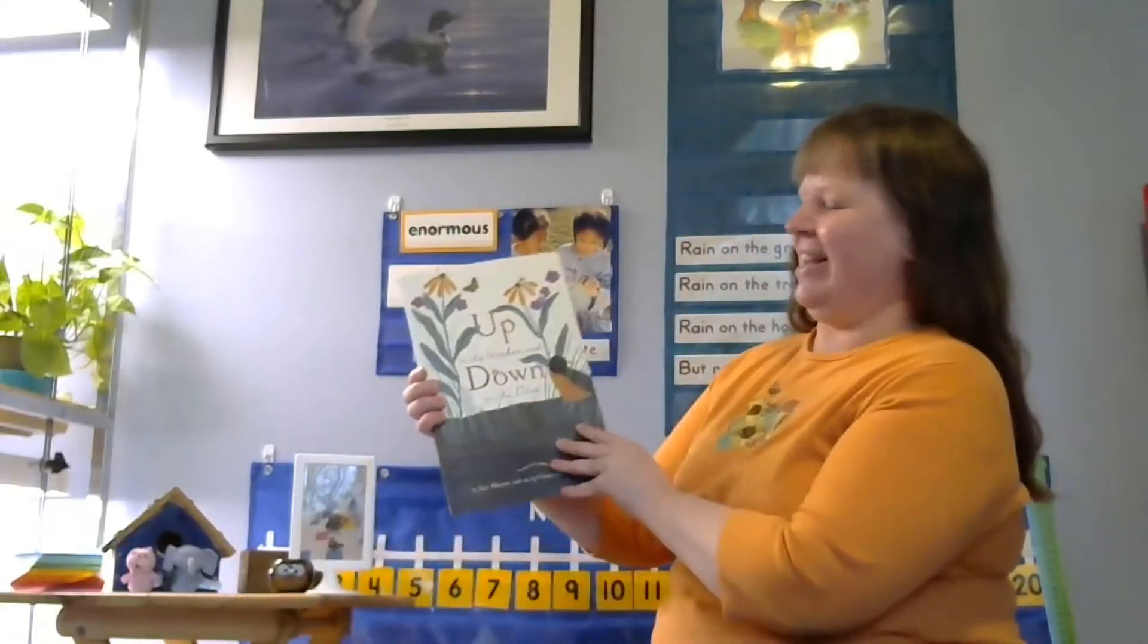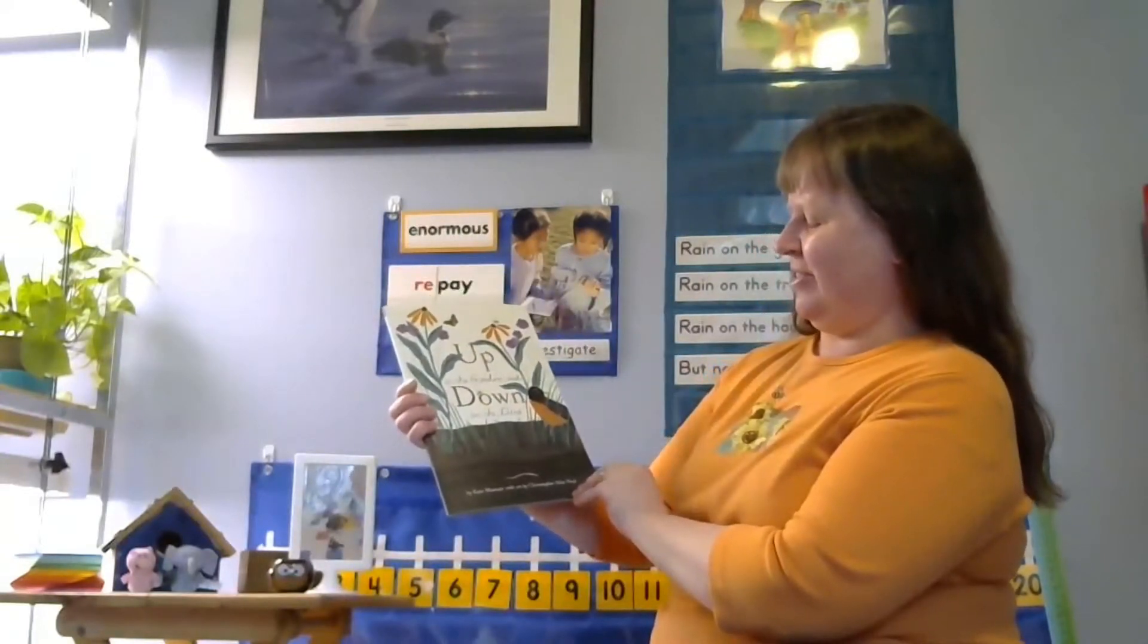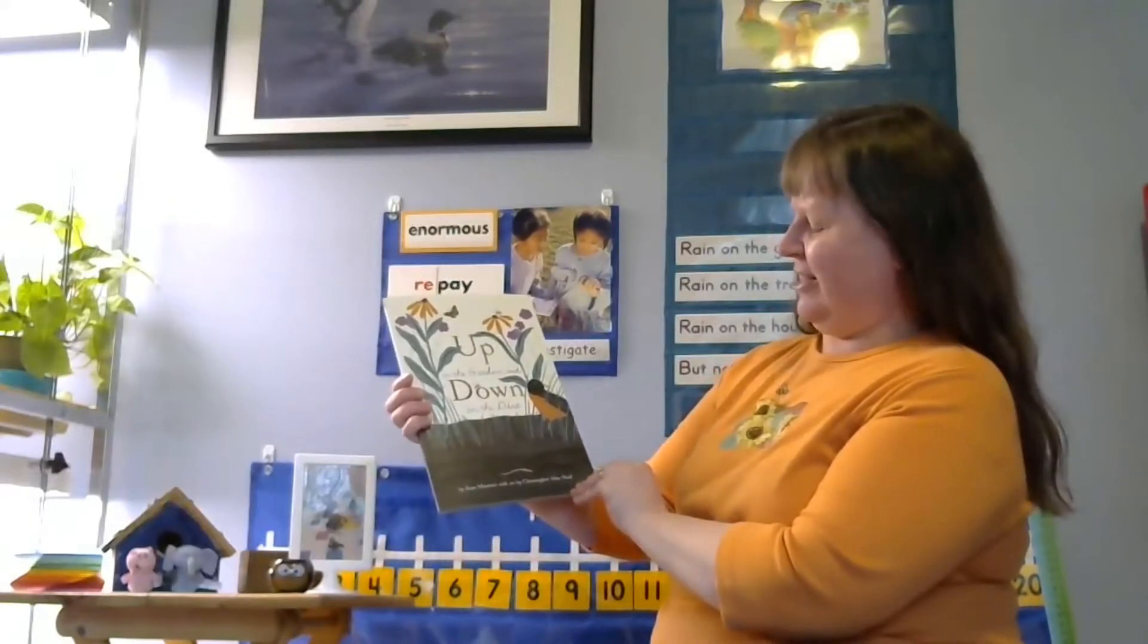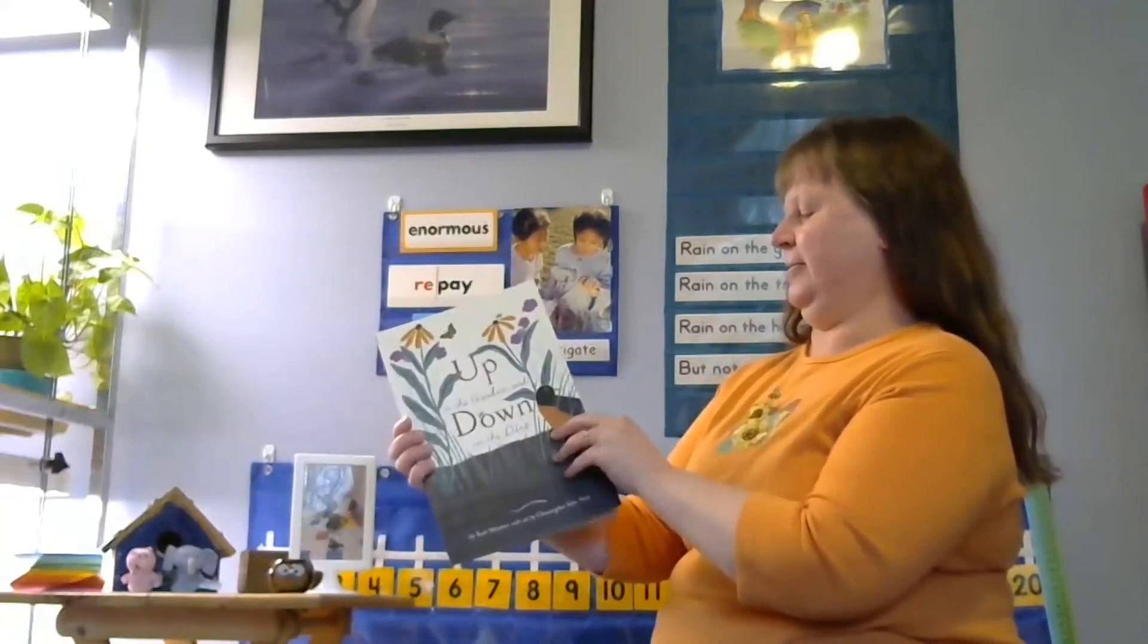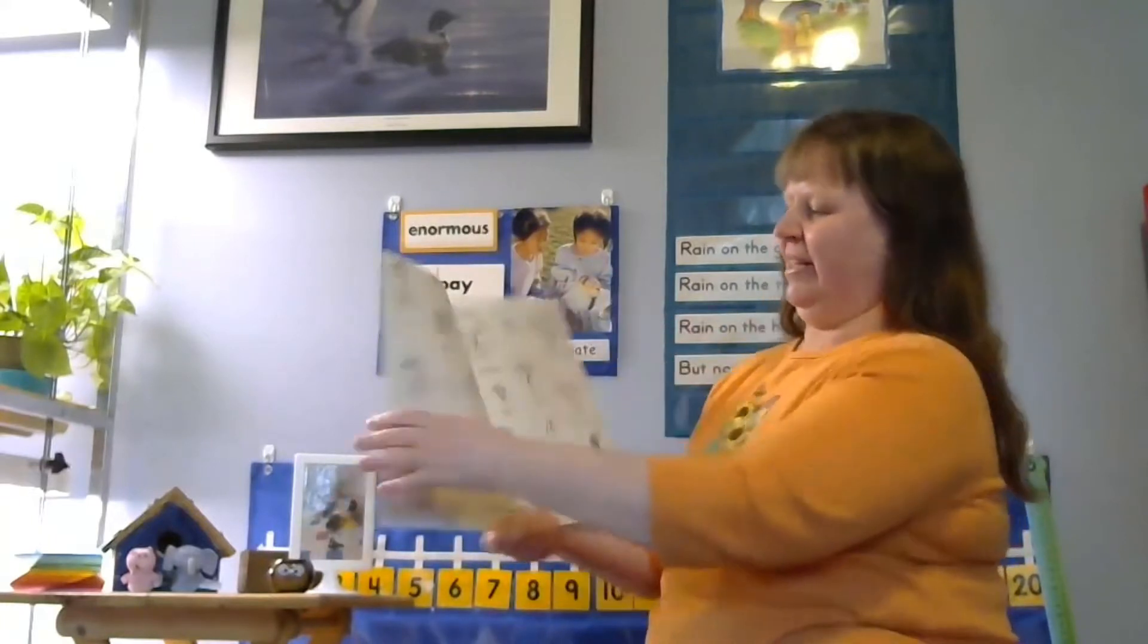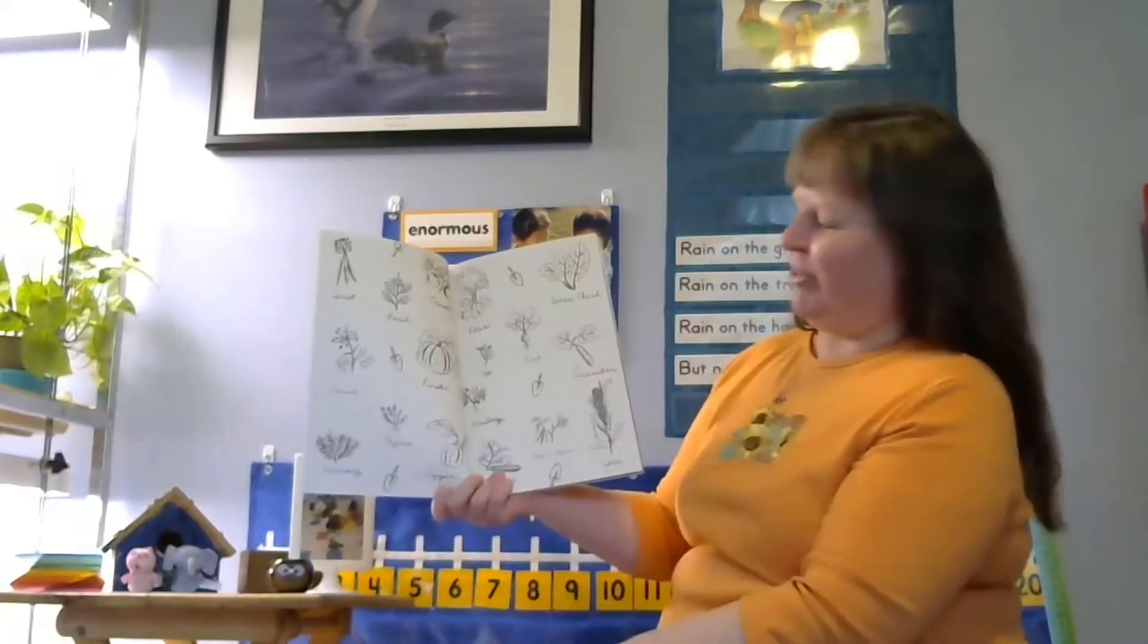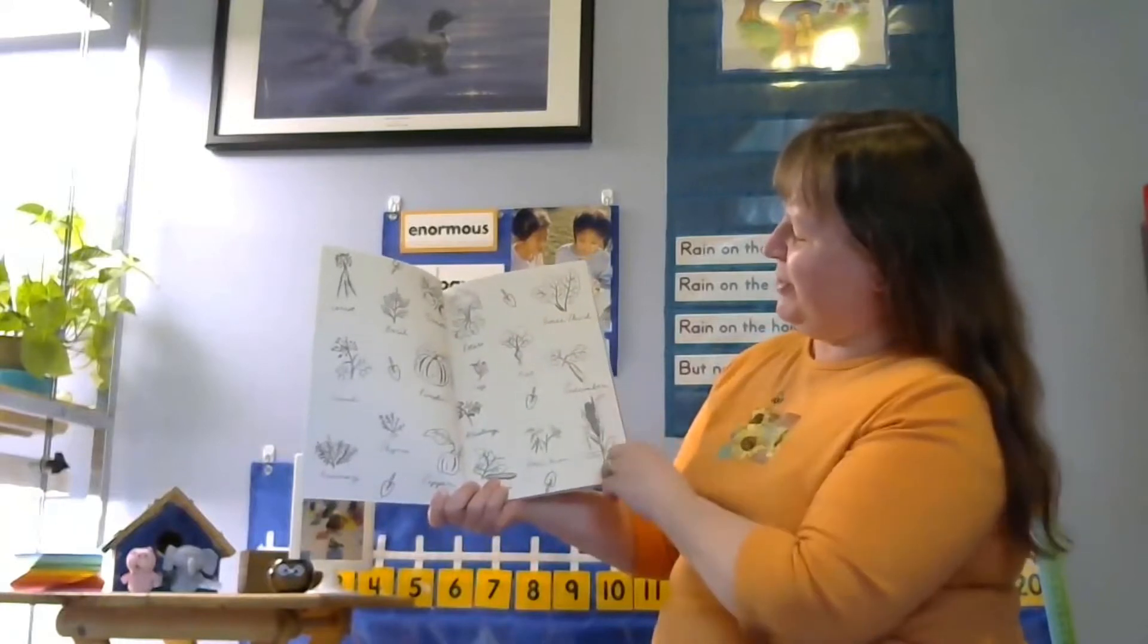So I have a book today called Up in the Garden and Down in the Dirt. The author's name is Kate Messner and the art in this book was made by Christopher Silas Neal. They have some really nice end pages, don't they? They show a whole bunch of things that might grow in your garden. Pumpkin, tomato, cucumbers, beets.